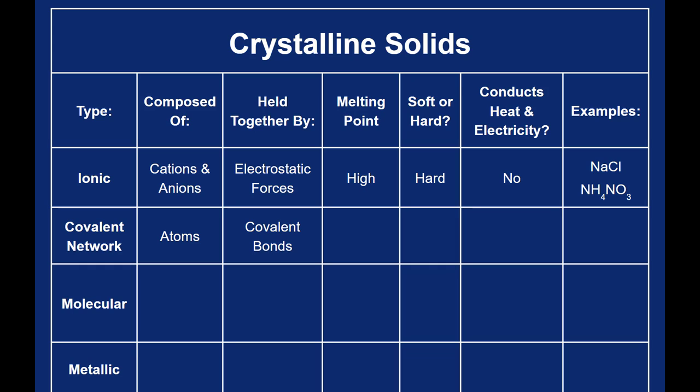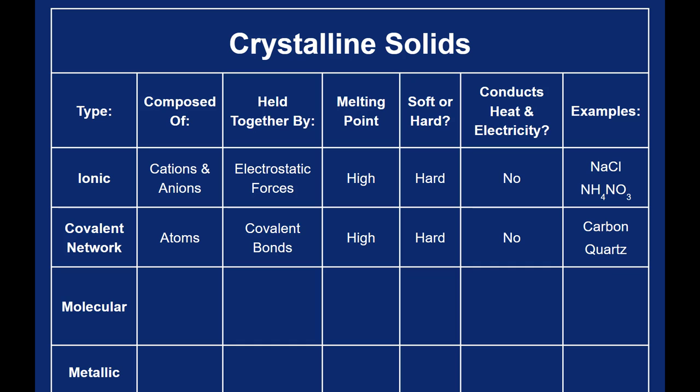The covalent bonds are really strong. So just like the ionic solids, they have really high melting points and they're very rigid crystals as well. In fact, diamond is one of the hardest substances known on Earth. The solids don't conduct electricity. Any form of pure carbon or quartz would be an example of a network solid.